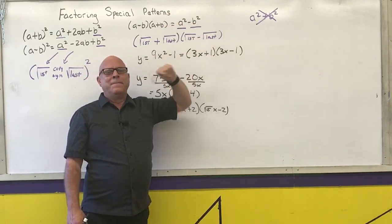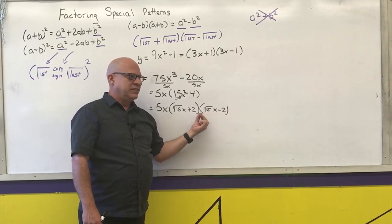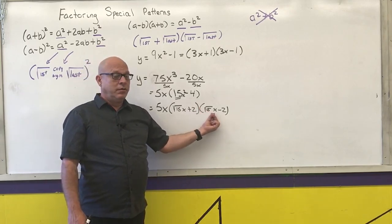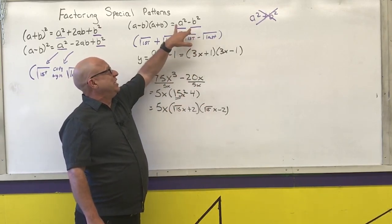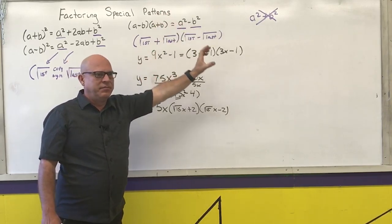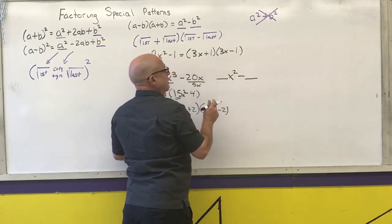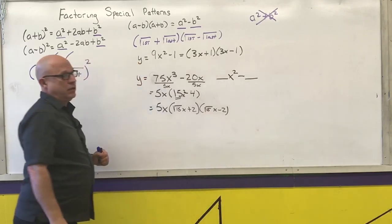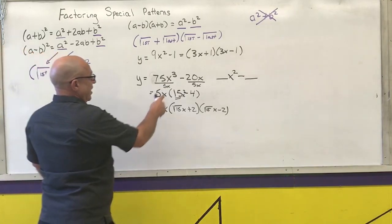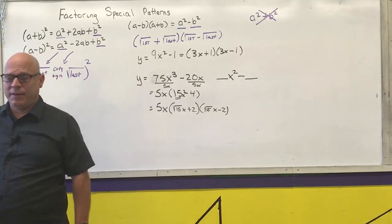Anytime you have something x squared minus a number, it's always going to be factorable. This is the first example I've given you where your answers are not rational numbers. But if it's in the form of a coefficient times x squared minus a constant, you can always, always, always use that pattern to solve it. You may have to pull out a greatest common factor before you can get it into that form.